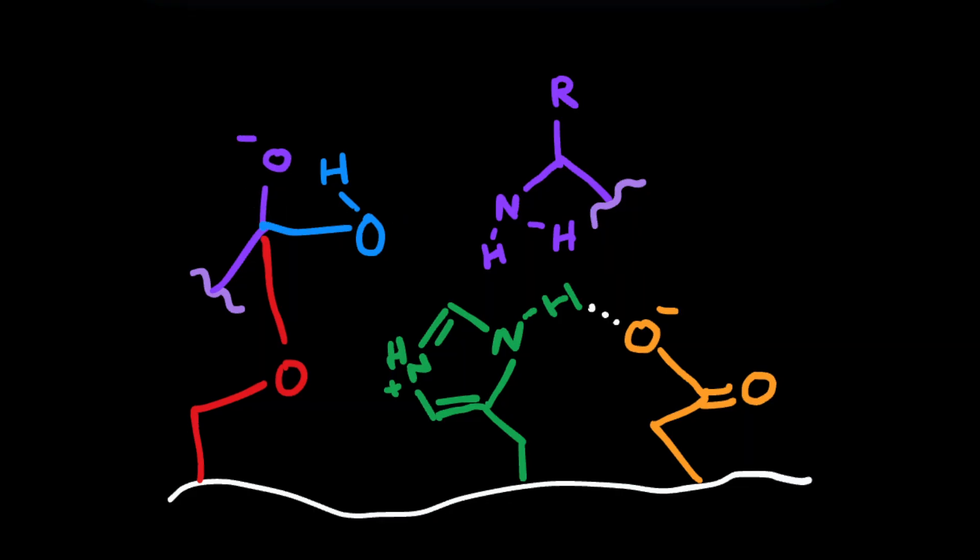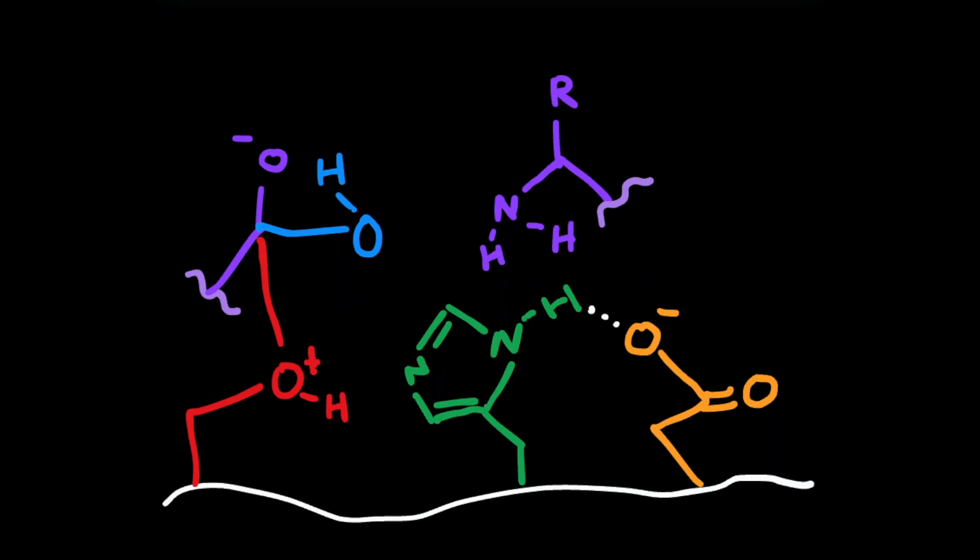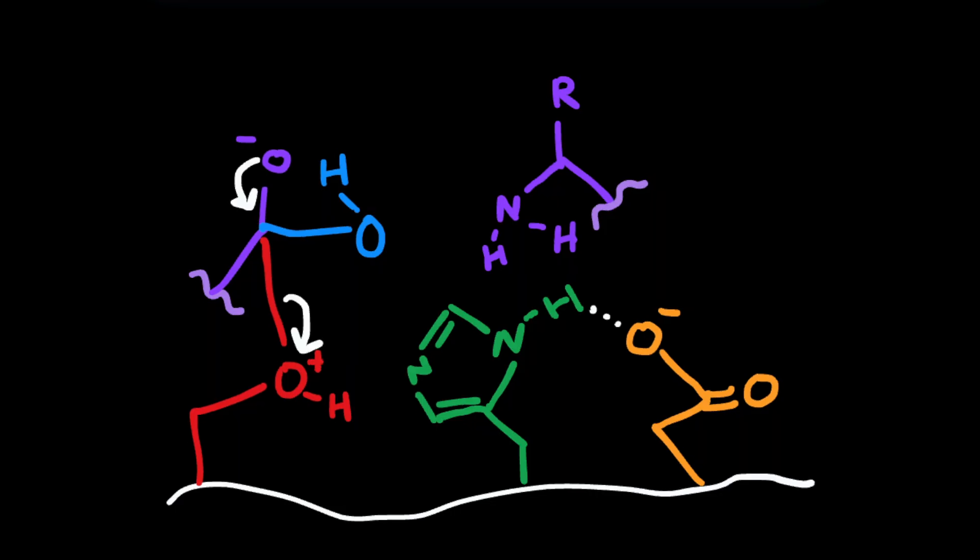This forms this kind of janky intermediate, and serine takes back its proton, allowing for a good leaving group, the detachment of that left side of the polypeptide.